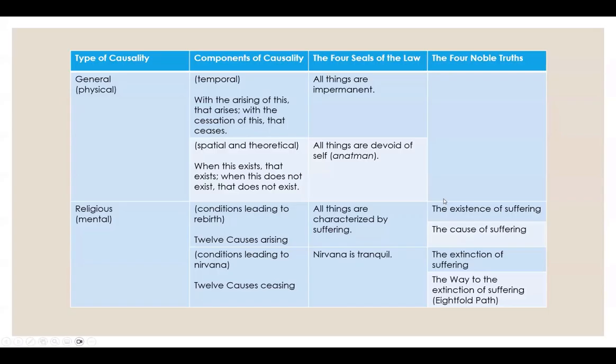I want to give some context for how this fits with the Four Noble Truths and the Four Seals of the Law, because it helps clarify why the Twelve Causes are important. This is a chart presented by Mizuno in his 'Essentials of Buddhism,' a great book about fundamental Buddhist teachings. When talking about causality in a general sense, there are two ways it's discussed: the temporal sense — 'with the arising of this, that arises; with the cessation of this, that ceases' — and a spatial and theoretical version: 'when this exists, that exists; when this does not exist, that does not exist.'